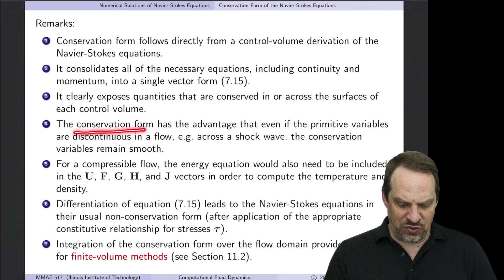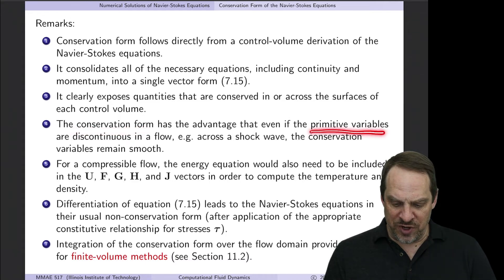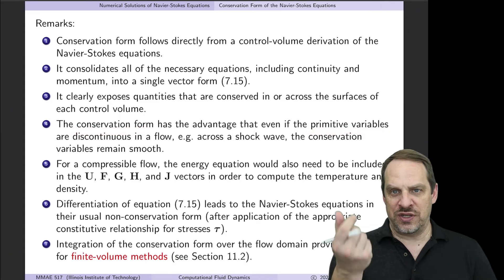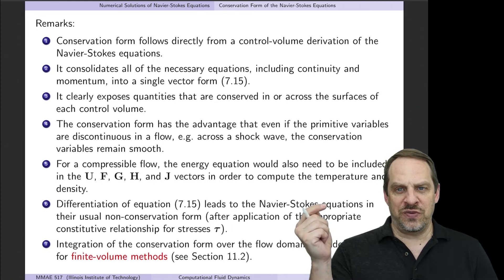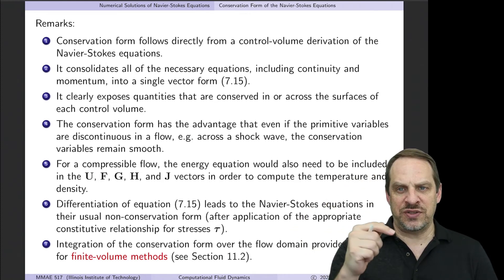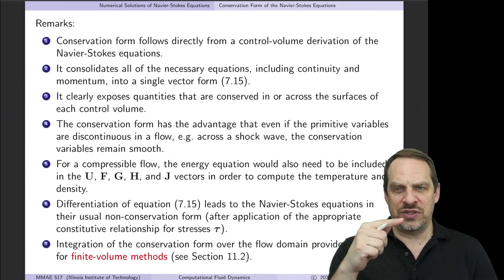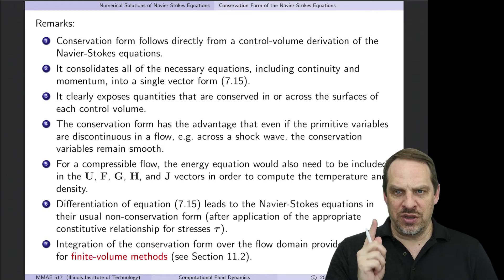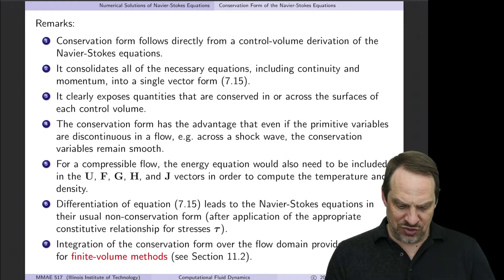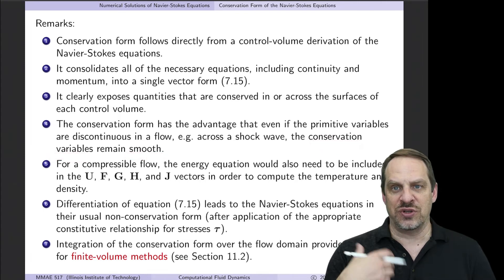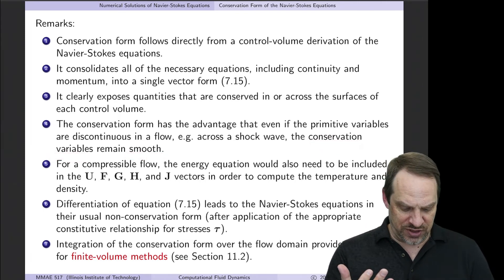One of the main advantages, numerically, is that in this conservation form, whereas primitive variables, for example, across, say, a shock wave, the primitive variables have a step change. Velocities change abruptly, densities change abruptly, and so on. But the product of the two does not. So whereas a velocity or density might be discontinuous, the conservation variables remain smooth. And of course that's good for numerical calculations.